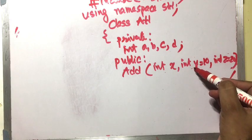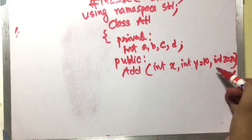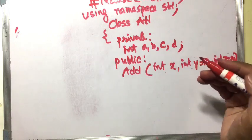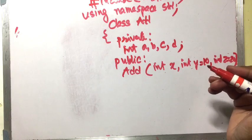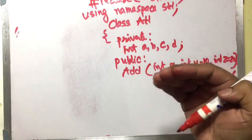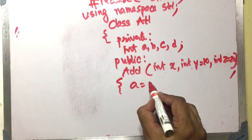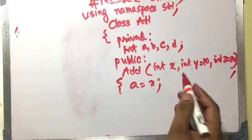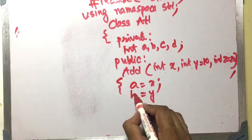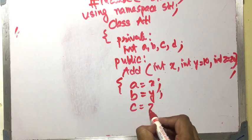It is used to hold a default value in case the caller forgets to assign some value during the function call. Inside the constructor, a equals x, b equals y, and c equals z — transferring the parameter values to member variables.